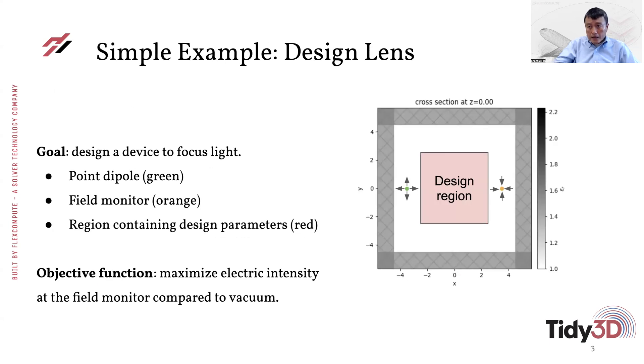So it's a relatively simple example. And what our goal here is to design a device to focus light. So imagine that we have a two-dimensional simulation. Imagine that we have a point source as indicated by the green dot on the left here. And the objective here is to focus the emitted light from this point source as much as possible onto the orange point, the field monitor point on the right.